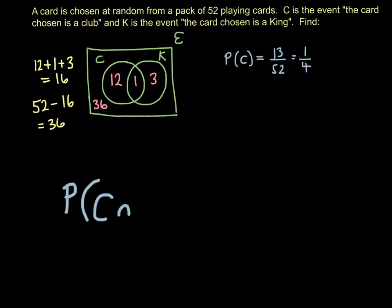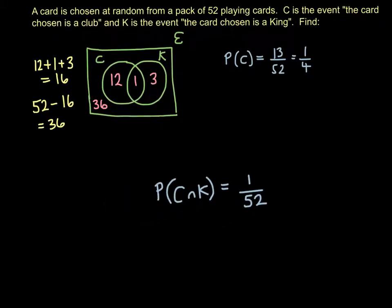Before you get into the harder ones, let's have a look at the probability of the intersection between the event C and the event K. So that's the intersection in the Venn diagram. What you're looking for is the king of clubs. So there's only one number in that section on my Venn diagram. So the answer is just going to be simple. It's 1 over 52. So they're not particularly tough at the moment.